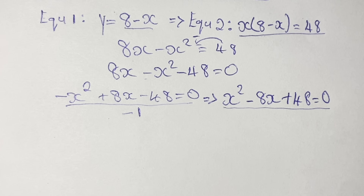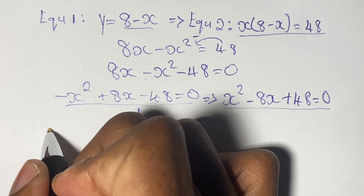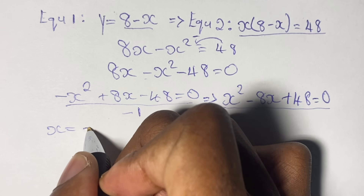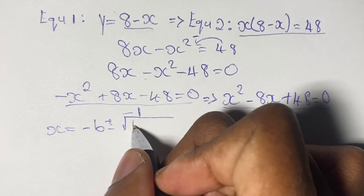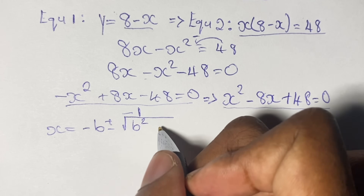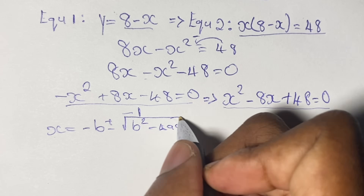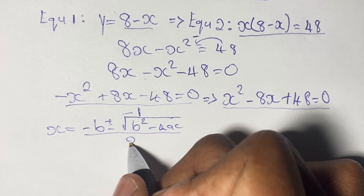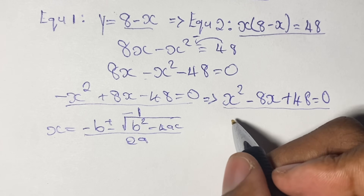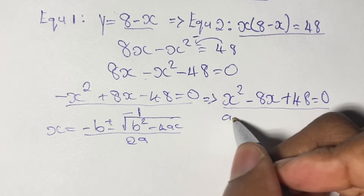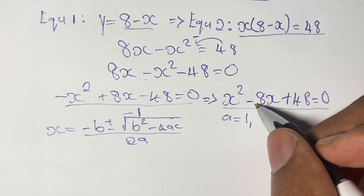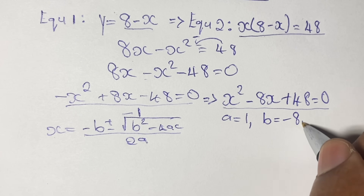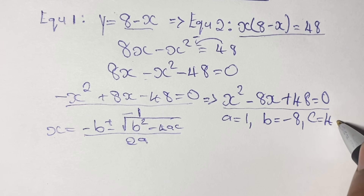This is our quadratic equation and we will solve it using the general quadratic formula: x equals negative b plus or minus the square root of b squared minus 4ac, all over 2a. In this case, a equals 1, b equals negative 8, and c equals 48.